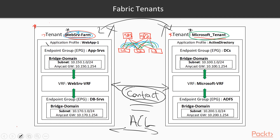Inside a tenant we can create an application profile to group resources based on application — for example, Web App One. We then create an endpoint group to associate servers belonging to that web app. But this isn't complete until we give it addressing so it can communicate in the fabric. That's done with a bridge domain. A bridge domain allows communication for those endpoint groups within the application profile, and you assign an IPv4 network along with its default gateway.